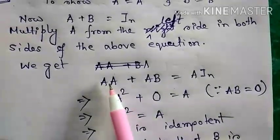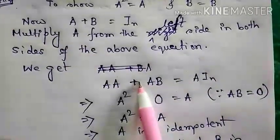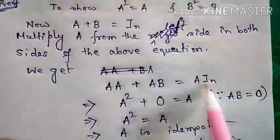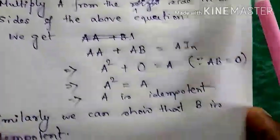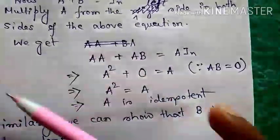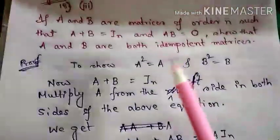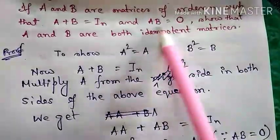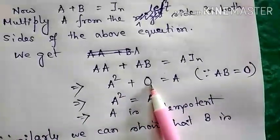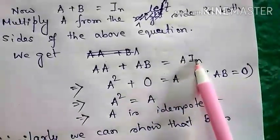This means A² + AB. What is AB? Given that AB equals the zero matrix, this implies A² + 0 = A·In = A.